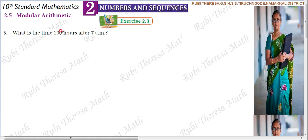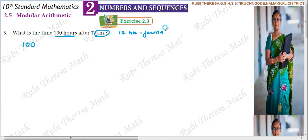If you think about the time 100 hours, first we have to consider the number 100 and calculate what format we use. They have mentioned am. am and pm — it is a 12-hour clock format. We have to calculate 7 hours, 13 hours — that is a 24-hour clock format. Since am is mentioned, you have to take the 12-hour clock.